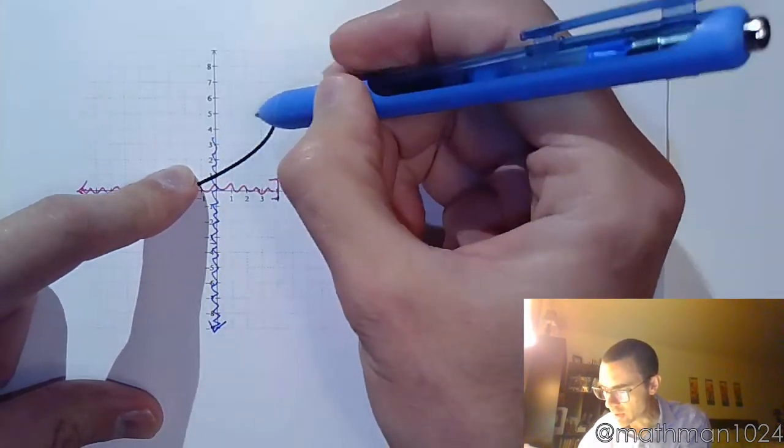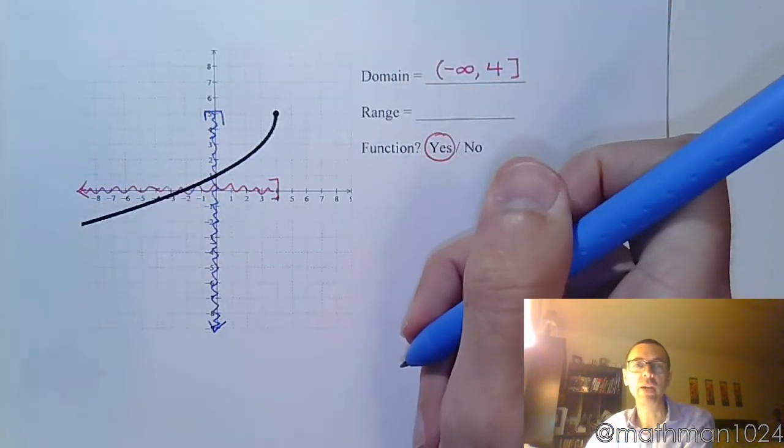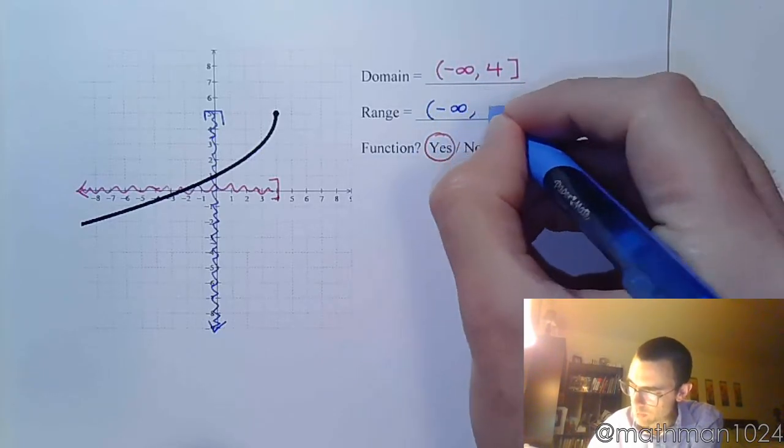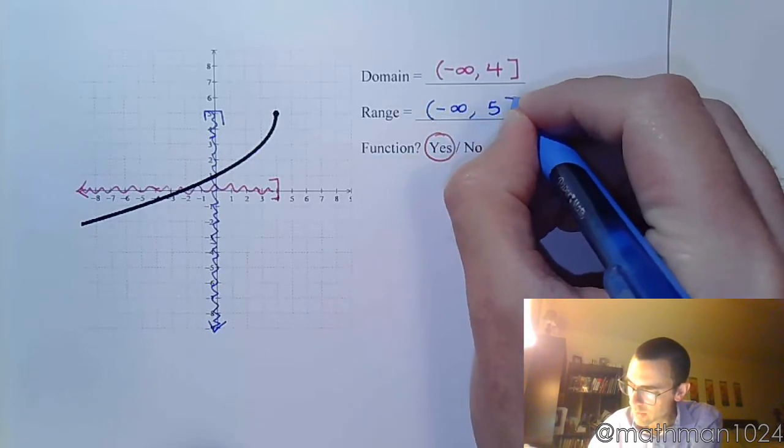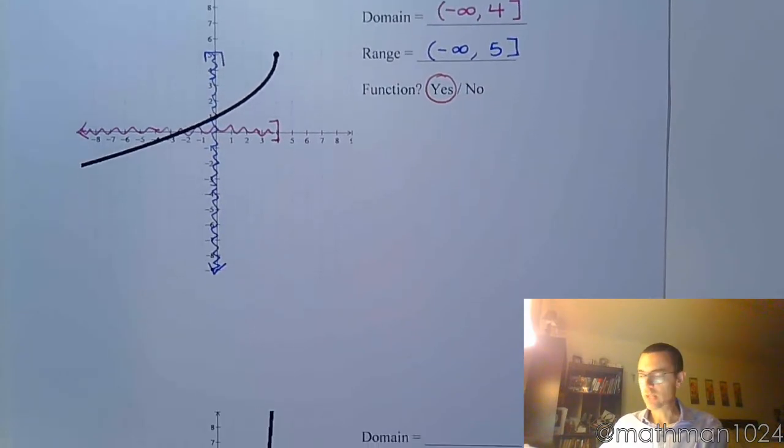and higher. But he stops at a value of 5. The y values do not go beyond positive 5. So it's from negative infinity to 5 with a bracket. Alright. Let's try this next one.